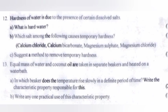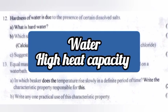Equal mass of water and coconut oil are taken in separate beakers and heated on a water bath. A: In which beaker does the temperature rise slowly in a definite period of time? Write the characteristic property responsible for this. Answer: Water. High heat capacity.